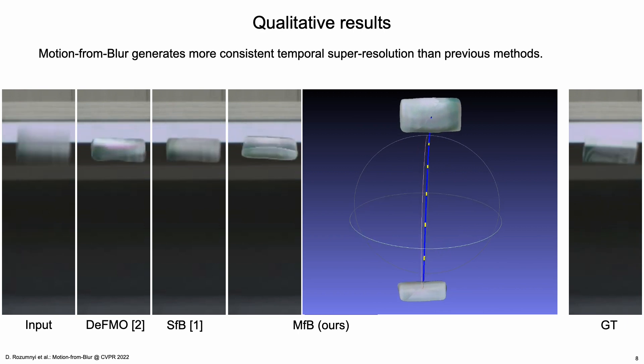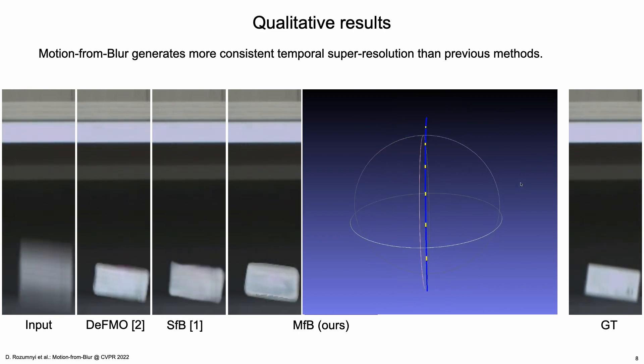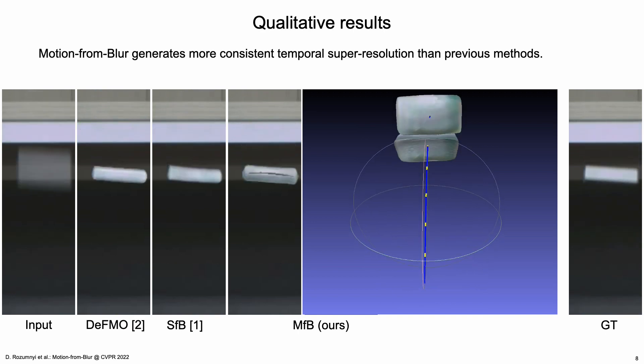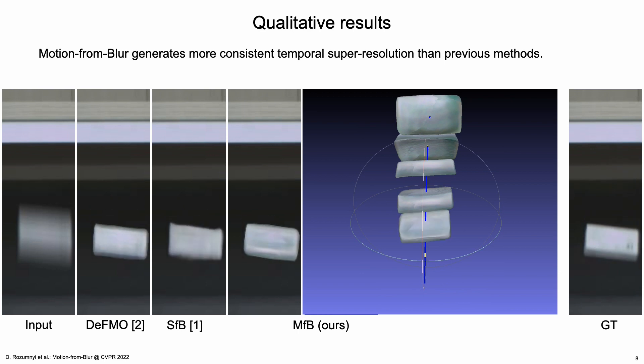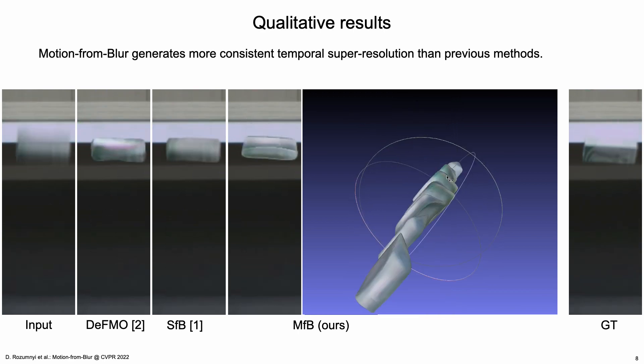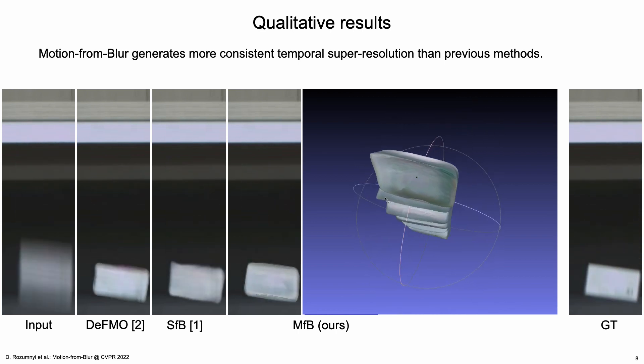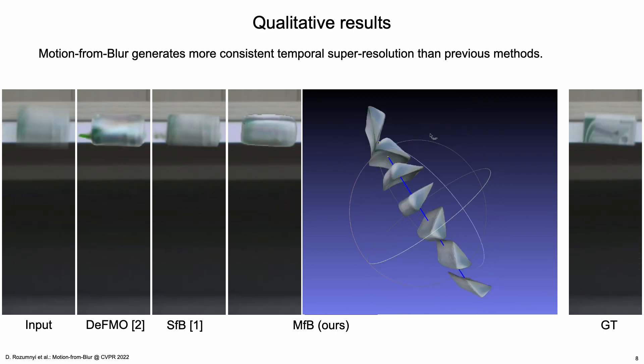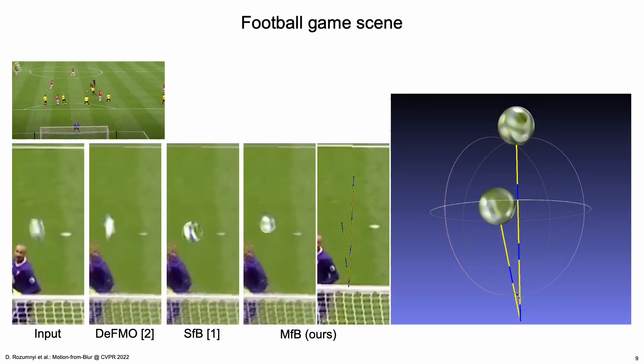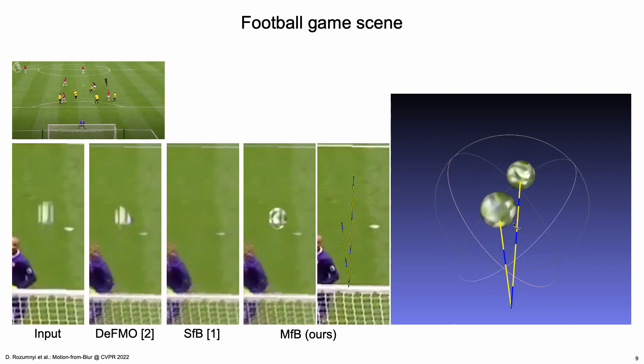Motion from blur generates more consistent temporal super-resolution than previous methods. Also, we are able to handle bounces.